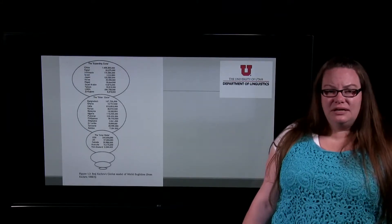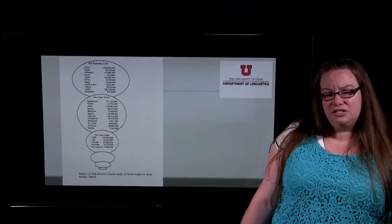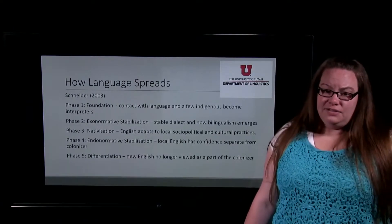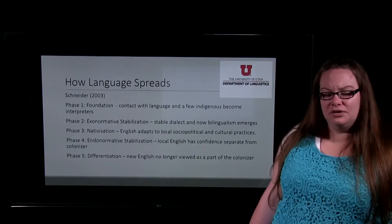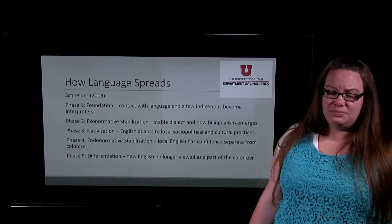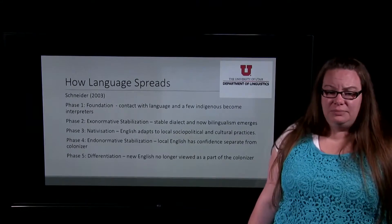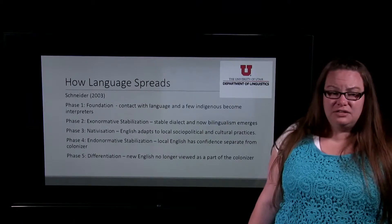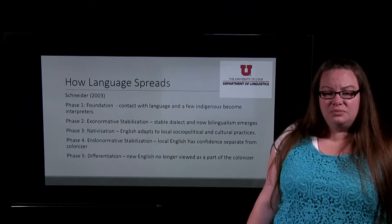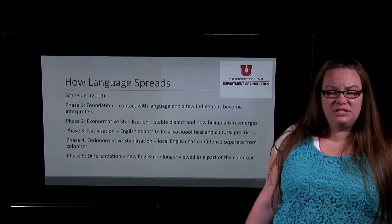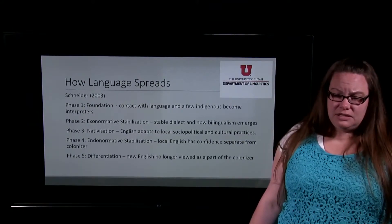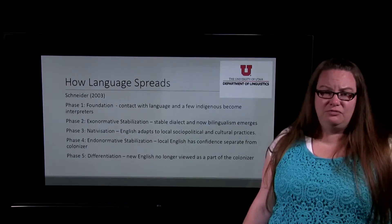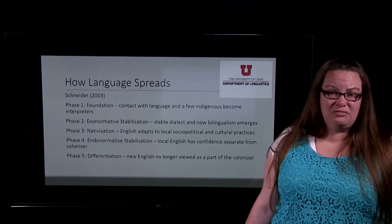The idea that the native speaker is the model is interesting, because most people exist in places where there are no native speakers who sound like me. The idea of what a native speaker of English looks like is changing as English expands throughout the world. Our book also presents information from Schneider about how language spreads, proposing five different phases. The first phase is foundation, where you have contact with the language and maybe a few indigenous people become interpreters — meaning the people who were there speaking their own language before English ever showed up.